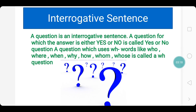If you ask any question, see what the answer could be. If the answer is yes or no, then it is a yes or no question. For example: are you coming? The answer is yes, I am coming, or no, I am not coming — hence it is a yes or no question. Generally, yes or no questions start with auxiliary verbs. WH questions use WH words and the answers are completely different.